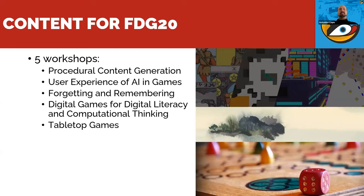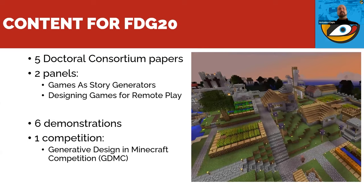We have five workshops. The Procedural Generation workshop, which took place yesterday, enters its second decade — it's the 11th workshop with this name. We also have User Experience of AI and Games, Forgetting and Remembering Digital Games, Digital Literacy and Computational Thinking, and Tabletop Games. We also had five doctoral consortium papers on Wednesday and Friday. We have two panels: one on games as story generators and one on designing games for remote play. On Thursday we will have six demonstrations and the FDG 2020 Generative Design in Minecraft competition.